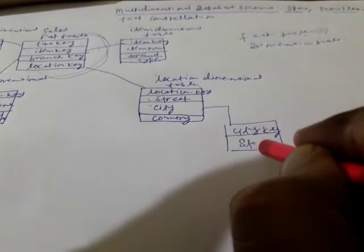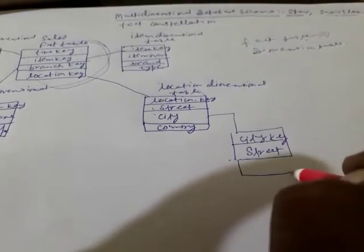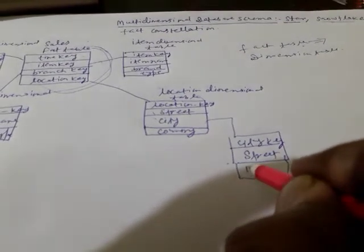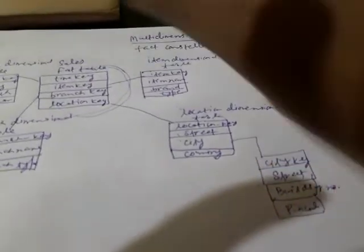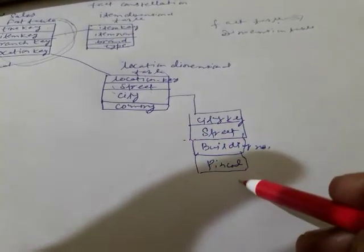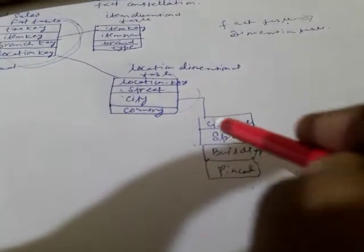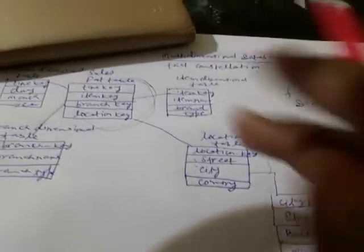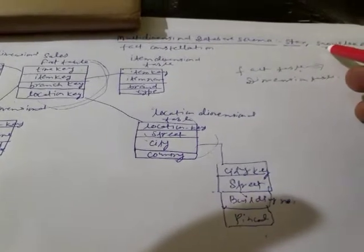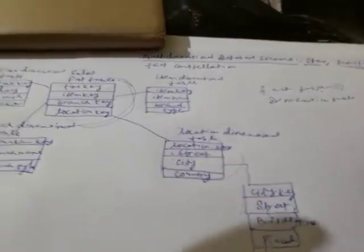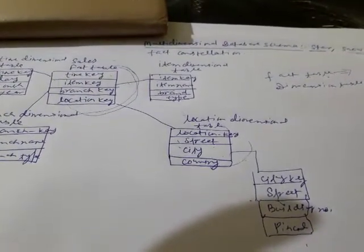Within the city key, you can write the street, building number, and also the pin code. So what we are seeing here is that the city table is further divided into another table. Just like ice has one more layer, here the dimension table has more than one dimension table. This type of structure is known as the snowflake schema.